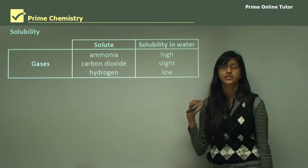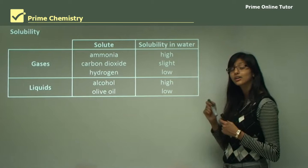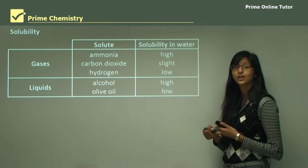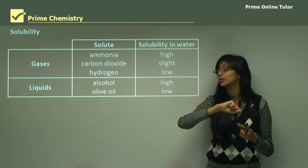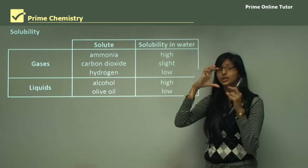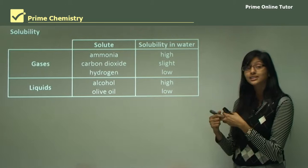Now let's look at liquids. Alcohols have high solubility in water — when you put alcohol in water, it is easily soluble. But olive oil in water is not very soluble. For example, when you add olive oil to a beaker of water, you can see two different layers forming: the top layer is oil appearing yellow, and the bottom layer is pure water. This is because olive oil is insoluble and does not dissolve in water, so it forms its own separate layer.